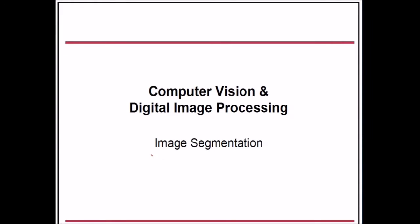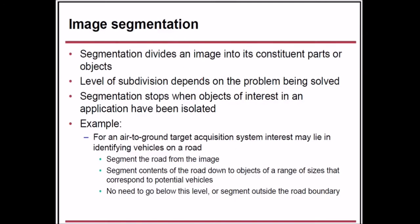Today we will look at image segmentation under digital image processing. Segmentation divides the image into constituent parts or objects. We deal with these objects and the level of subdivision depends on the problem being solved. Segmentation stops when the objects of interest for a given application have been isolated.